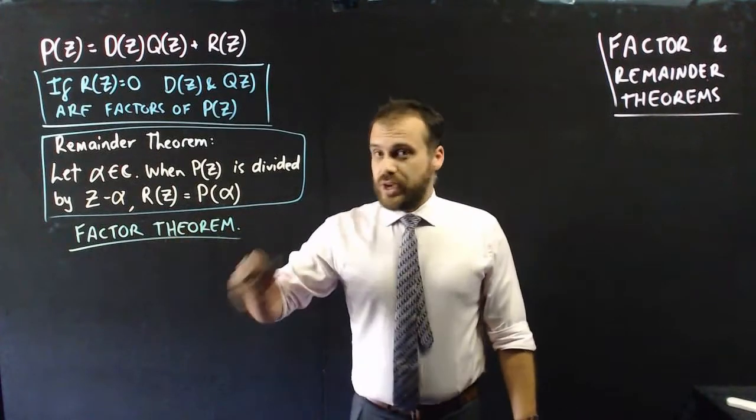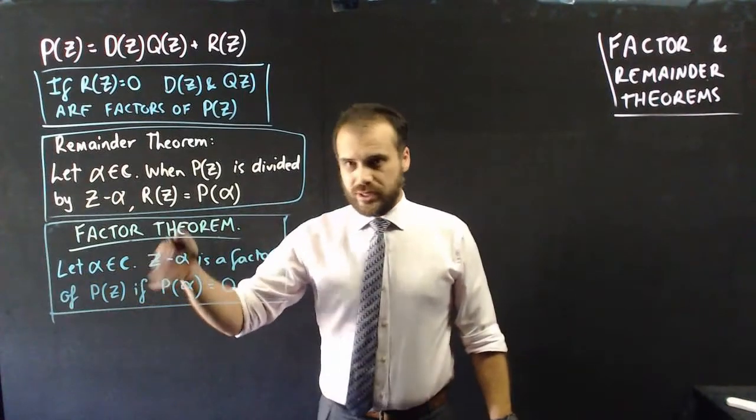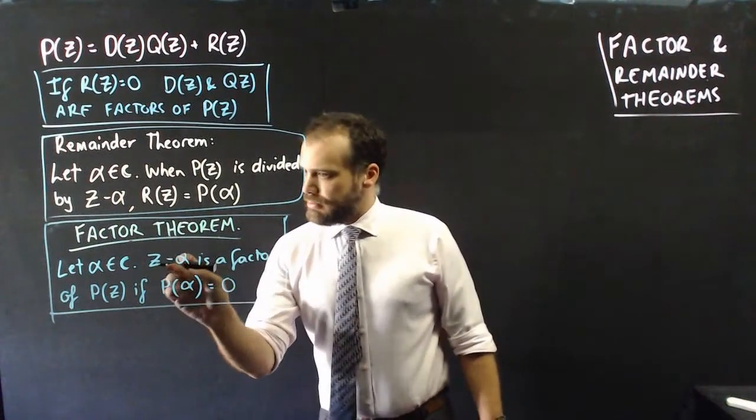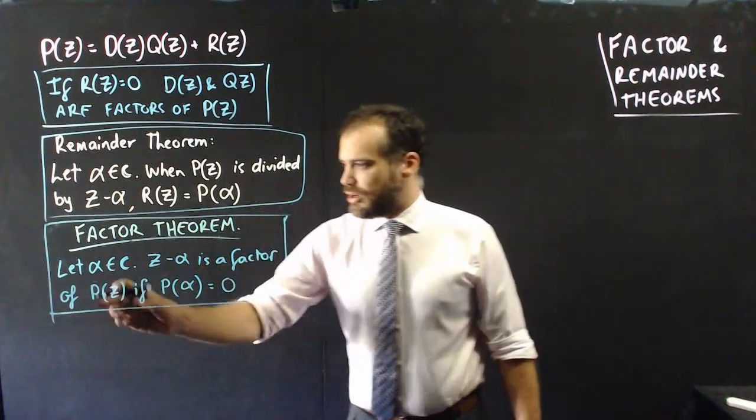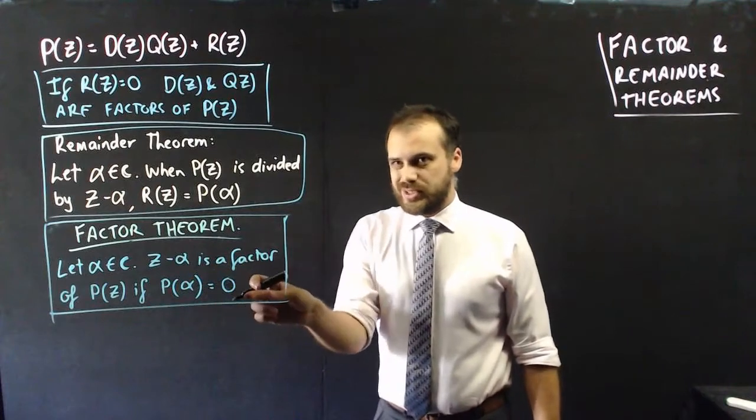The factor theorem follows very neatly from the remainder theorem. Alpha is in the complex numbers, real or complex. Now, z minus alpha is a factor of P z if P alpha is equal to zero.